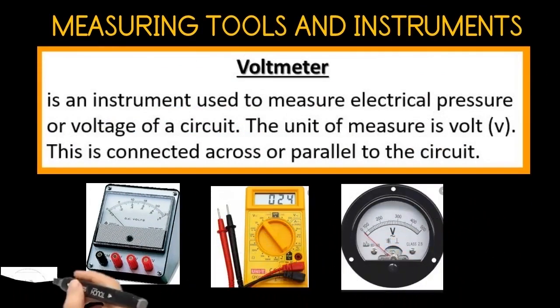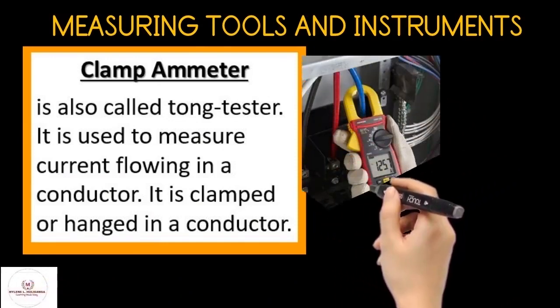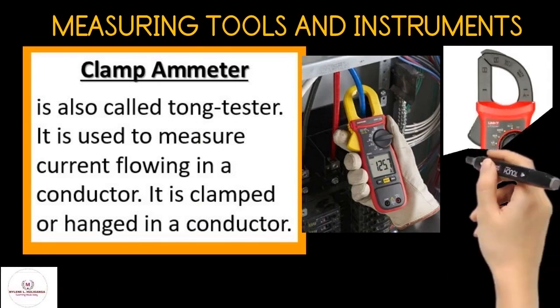The clamp ammeter. The clamp ammeter is also called tong tester. It is used to measure current flowing in a conductor. It is clamped or hanged in a conductor. Here is an example of clamp ammeter.